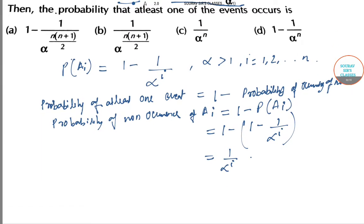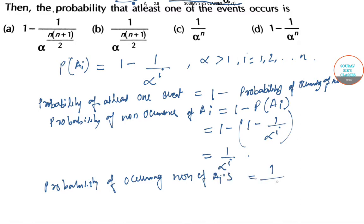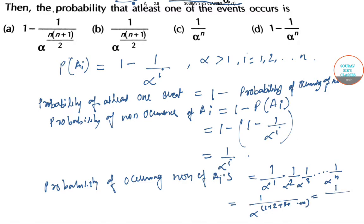Therefore, the probability that none of the Ai occur equals the product: 1 by alpha^1 times 1 by alpha^2 times 1 by alpha^3, up to 1 by alpha^n. This equals 1 by alpha to the power (1 + 2 + 3 + ... + n), which simplifies to 1 by alpha to the power n(n+1)/2.